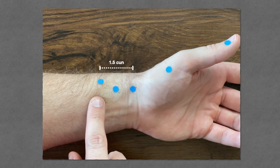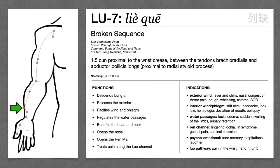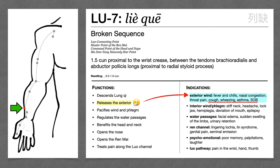Lung 7 is one and a half cun proximal to the wrist crease, off the line, just proximal to the styloid process between the two tendons. Lung 7 is a very important point — it belongs to several different point categories and has a wide range of actions, and it's very commonly used in the clinic. The lung governs the exterior and the opening and closing of the pores, and Lung 7 is one of our major points for releasing the exterior and expelling wind for both wind cold and wind heat. Fever and aversion to cold are signs of a pathogen on the exterior. If a wind cold or wind heat pathogen gets into the lung, it can block the descending of lung qi, resulting in cough, wheezing, or shortness of breath. So Lung 7 also descends lung qi to treat these symptoms.